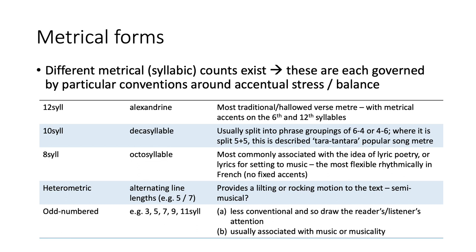In French poetry, there are conventions around how many syllables you should have in a line, how formal or informal that makes it, how musical or unmusical it makes it. The most established and respected verse line in French is the Alexandrine with 12 syllables. This would typically be used for poetic content that's quite serious, quite highbrow, quite significant — for epic drama as much as for a poem about love.